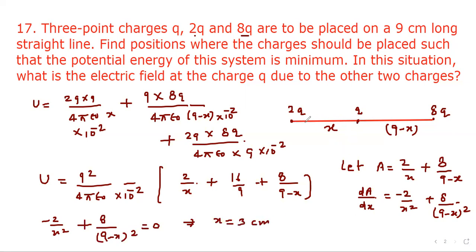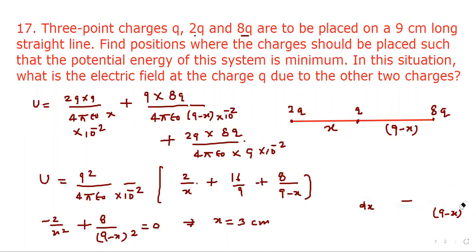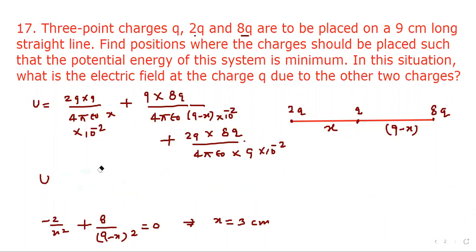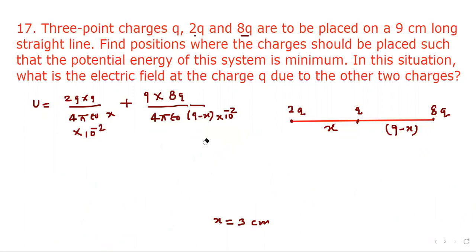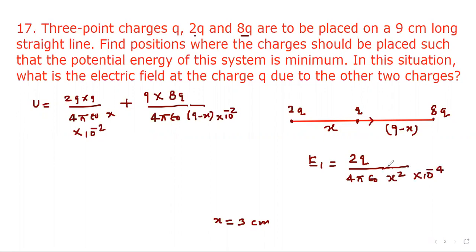So the distance from 2q to q should be 3 centimeters, and the distance from q to 8q should be 6 centimeters. Now we have to find the electric field at the small charge q due to the other two charges. The electric field E1 due to charge 2q on this charge will be directed along AB, and E1 equals 2q divided by 4 pi epsilon naught times x squared times 10 to the power minus 4.